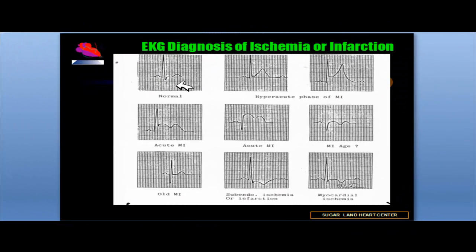Let us begin with the normal electrocardiographic representation, which is represented by a P wave related to atrial activity. Then we have the QRS complex, which represents ventricular depolarization, followed by the ST segment and after that the T wave, which represents ventricular repolarization.